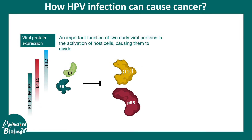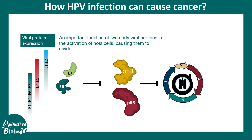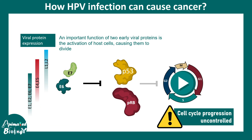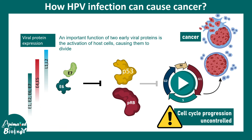The viral proteins E6 and E7 can inhibit two important tumor suppressor genes — p53 and pRb — both of which regulate and suppress uncontrolled growth and progression of the cell cycle. When E6 and E7 block p53 and pRb activity, the cell cycle cannot be checked, resumes uncontrollably in many host cells, and leads to cancer development.